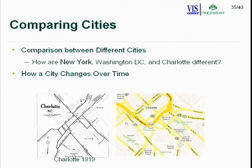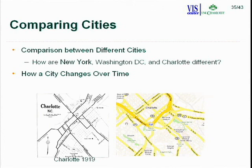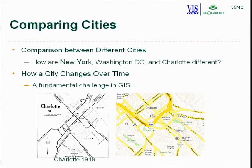We can also track how a city changes over time in a quantifiable manner. Charlotte in 1919 was a nearly perfect grid — with 1st, 2nd, and 3rd Streets downtown — but as it expanded, roads went everywhere. We presented this idea at a workshop and found that tracking city change over time is still a fundamental challenge in the GIS community, with no good method yet established.